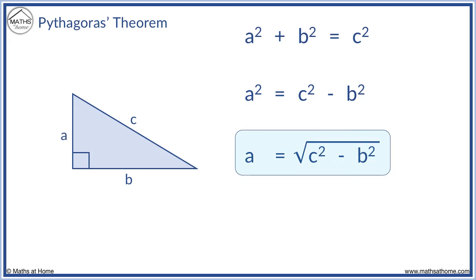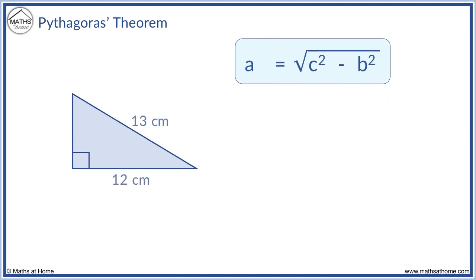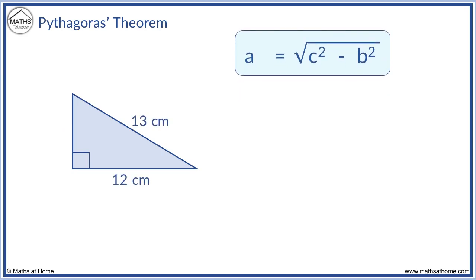We can use this formula to find either of the two shorter sides. We just simply label the missing shorter side as a. For example, here we know the hypotenuse and one of the shorter sides. We will label the other shorter side a.